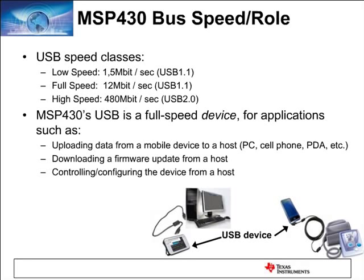Applications where the MSP430 full-speed device can be used include any embedded application that needs to download or upload data to a host. For example, a handheld meter with data logging capabilities could upload information to the host via USB. You could also have a simple USB meter that plugs into a host such as a printer to print information from the MSP430 device.